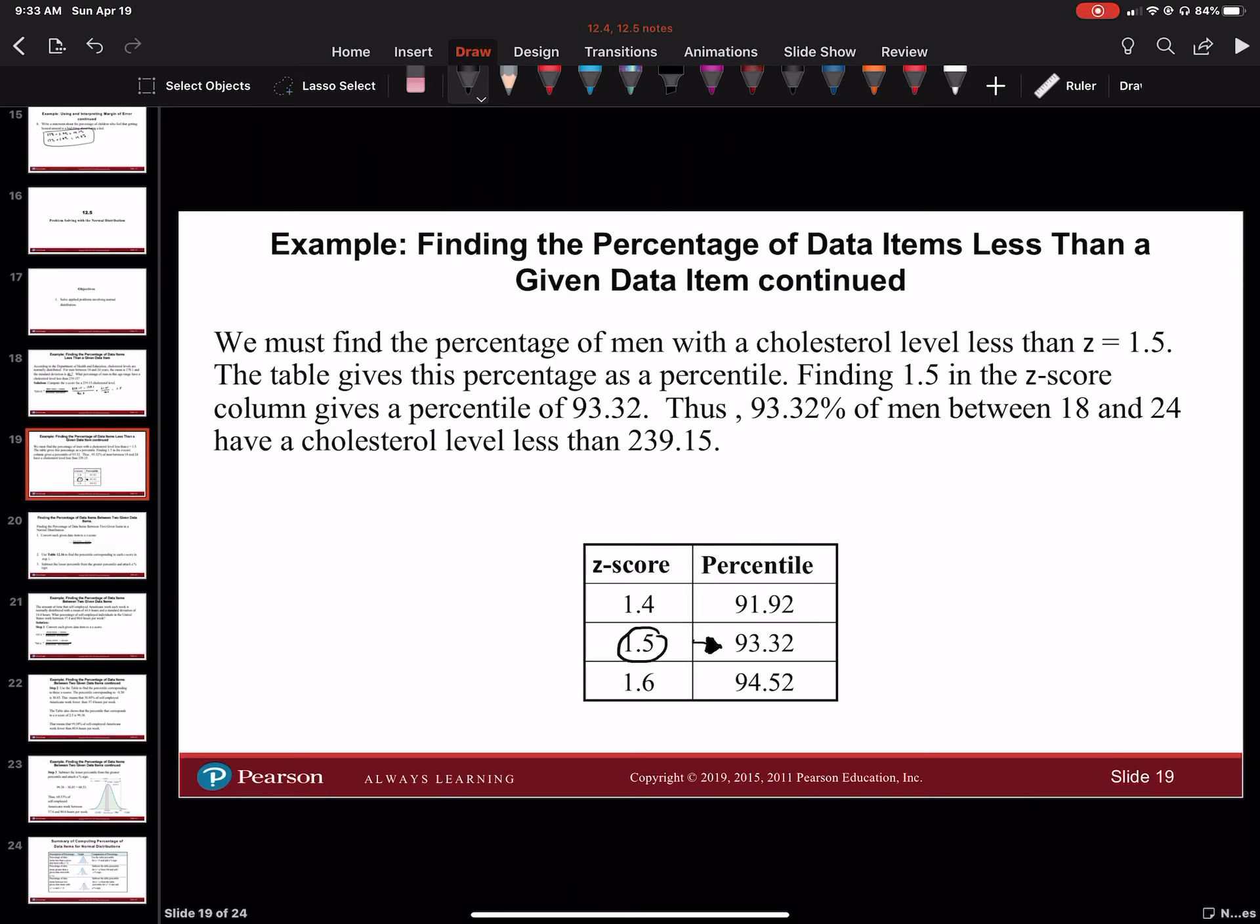Anytime you get ones that say above, you have to look at the opposite sign. If this said above instead of below, you would look at negative 1.5 to see what's below that, which would be the same as what's above 1.5.